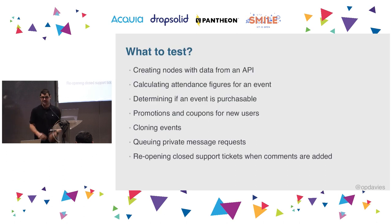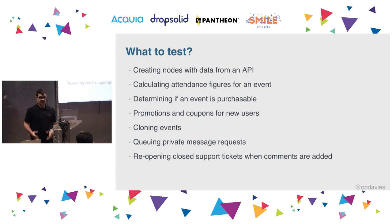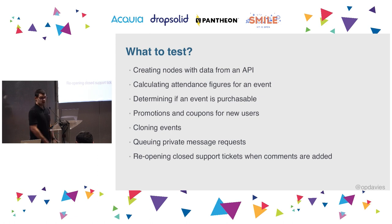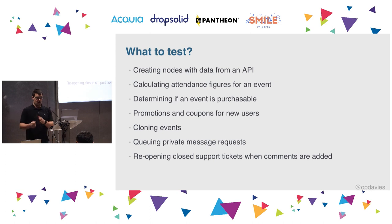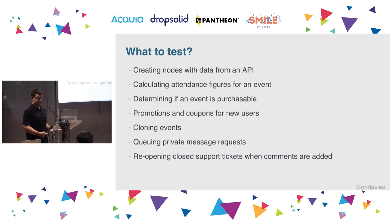Some examples of things to test from projects I've worked on: creating nodes with data from an API; calculating attendance figures for an event where the product was the event and attendees were tracked by who bought a place; determining if an event is purchasable based on date ranges and capacity; promotions and coupons for new users; cloning events to duplicate them for the next month or year; and sending private messages to attendees via a queue so we don't overload the web server with 500 emails at once.